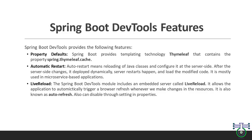The first feature is property defaults. When we talk about defaults like properties, we always think about the template. Templating is a technology where you find some data — let's say you have a variable. You want to show that in your browser, and Thymeleaf will help you to find that data and from the template page you can display the value. This is one of the features of DevTools.